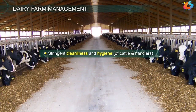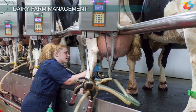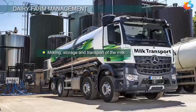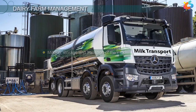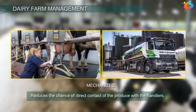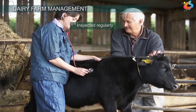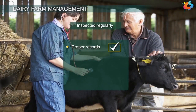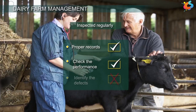Stringent cleanliness and hygiene of cattle and handlers should be maintained while milking, storage, and transport of the milk. Nowadays, these processes have been mechanized, which reduces the chance of direct contact of the produce with the handlers. However, machinery has to be inspected regularly and proper records have to be maintained to check the performance and identify defects.